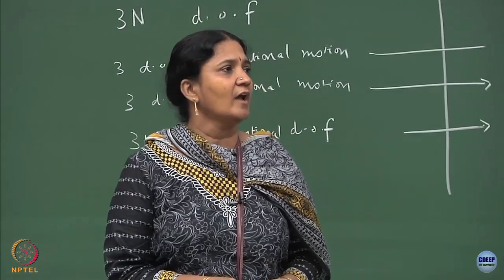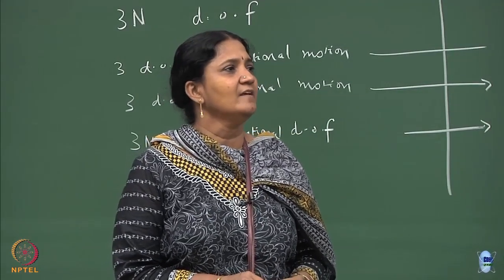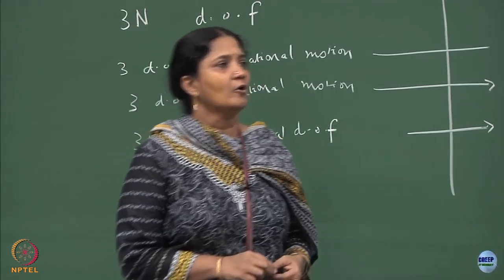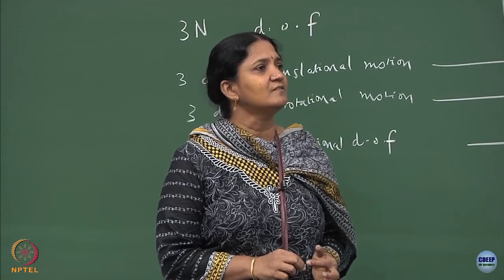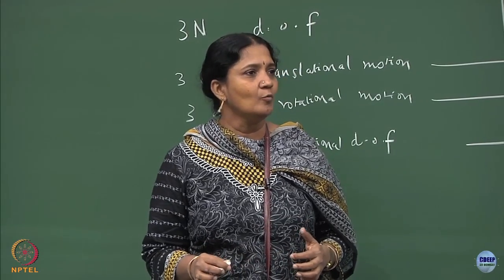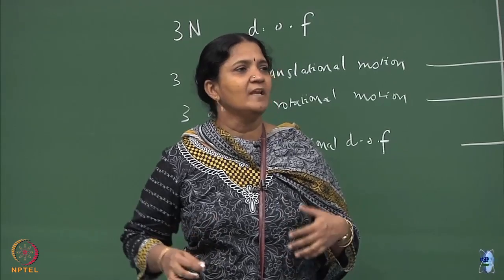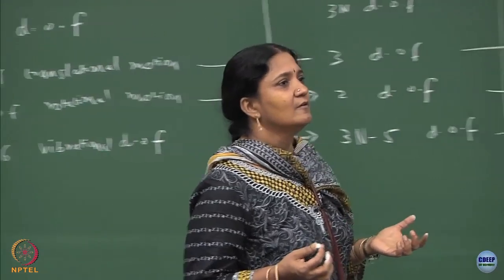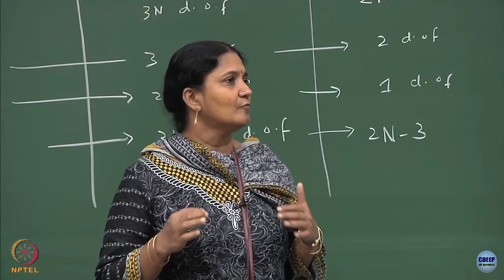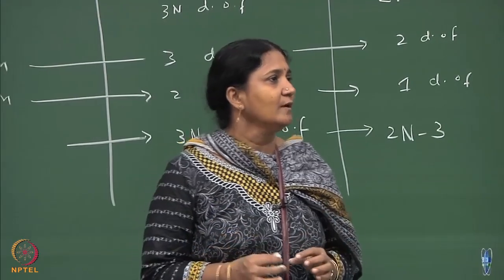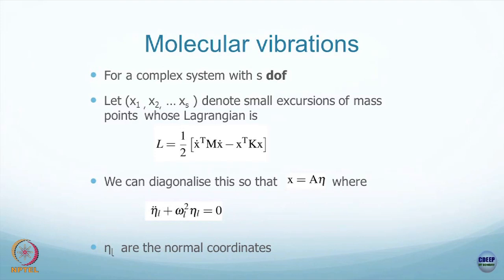Now I am going to do a little warm-up on classical mechanics to show how difficult or cumbersome it is to solve the equations. Then I will lead you to group theory to show how much simpler it can be for many complex polyatomic molecules. This is the theme of today's lecture. Given that there are s degrees of freedom, take x₁ through xₛ as deviations from the mean positions of the atoms.